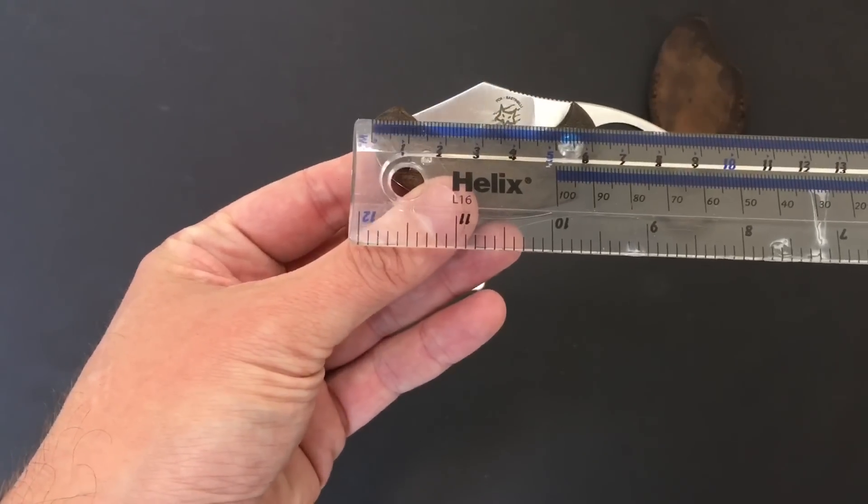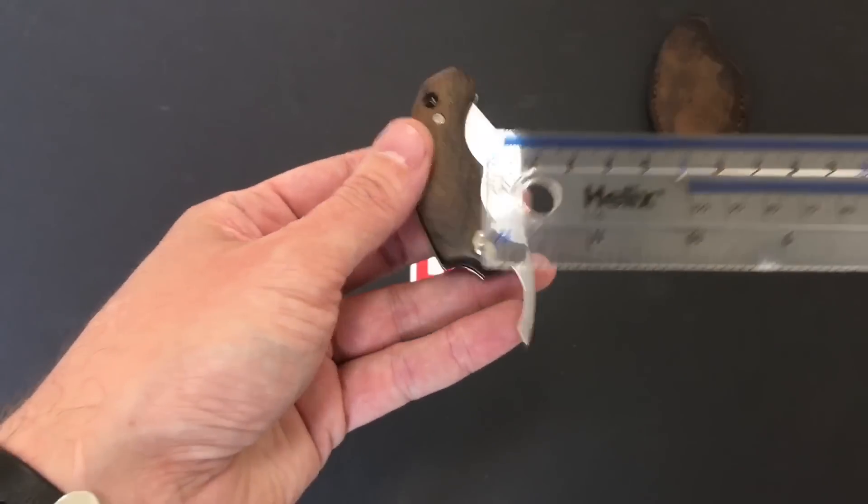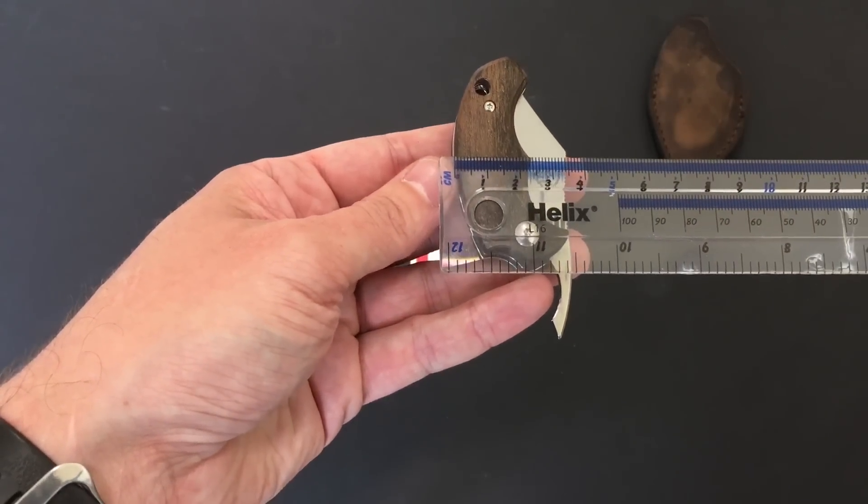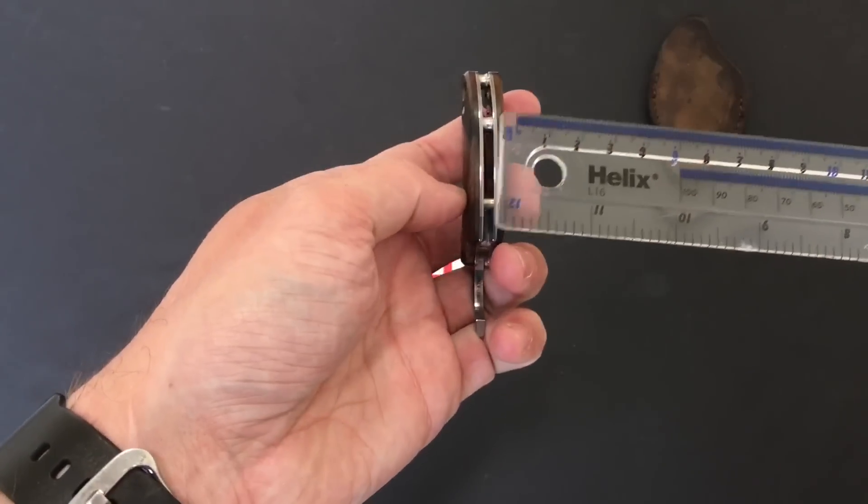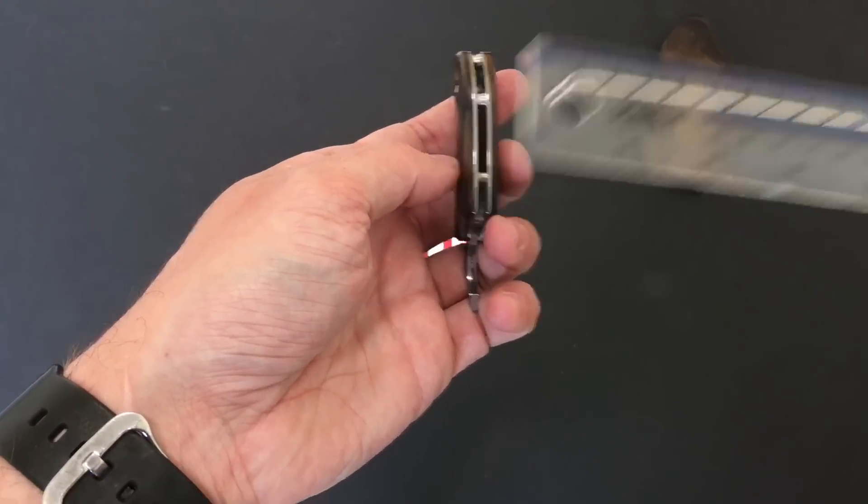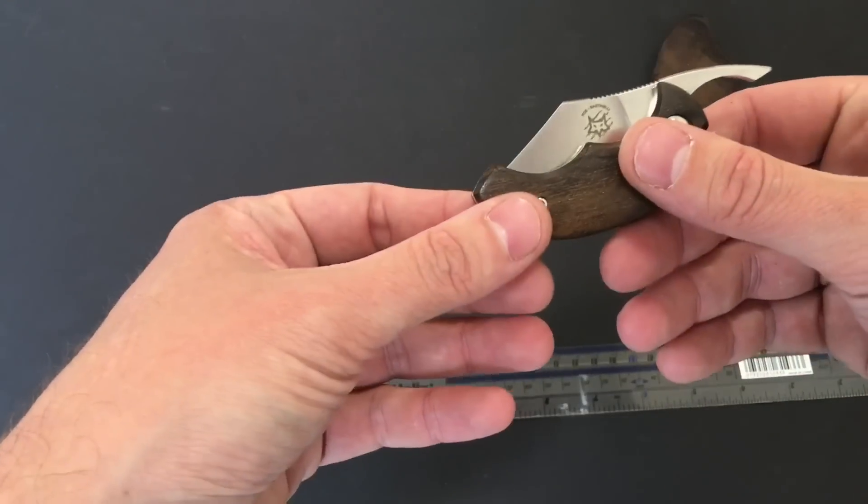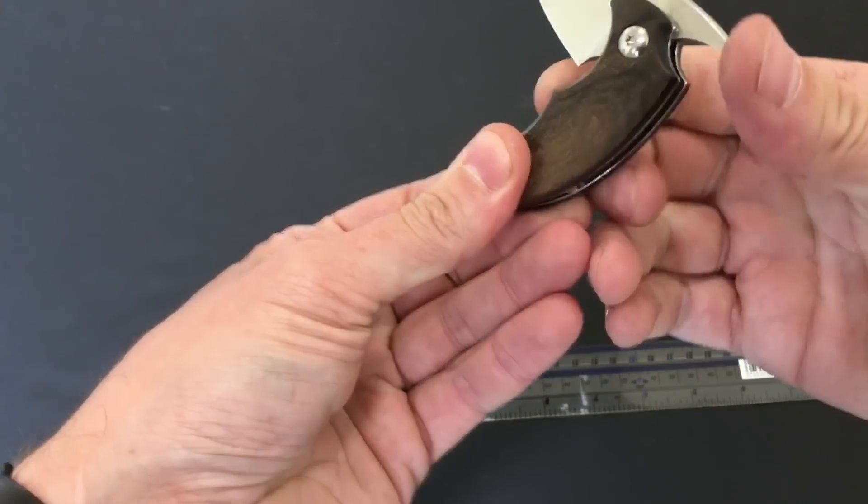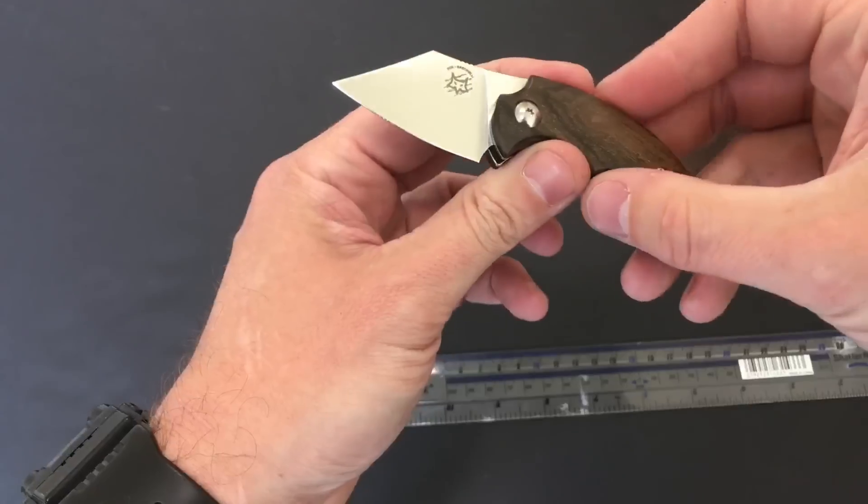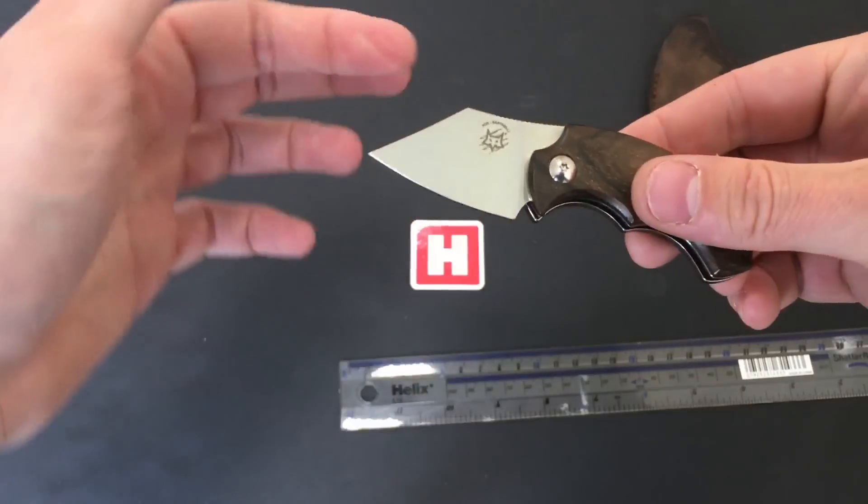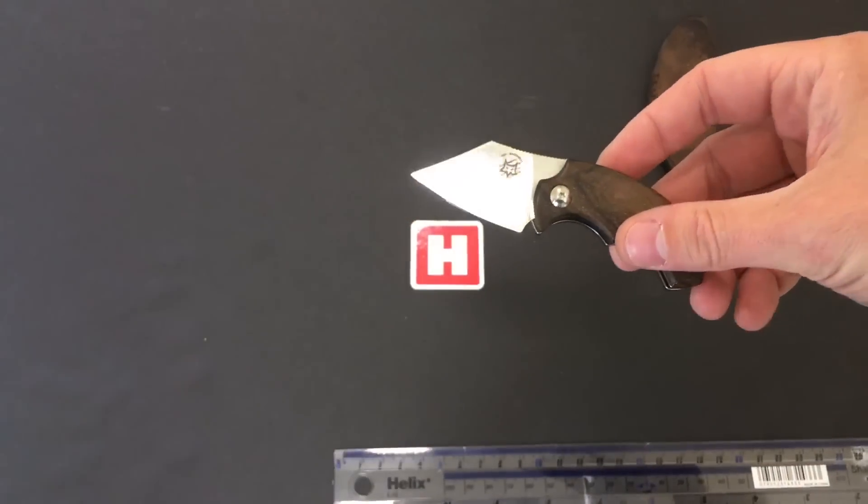And let's just measure him like that for you now. We're looking at nine centimeters and the widest part three and a half. We may as well do the width including the scales, looking at about 1.2. But a really nice Bastinelli designed and Fox come together for the Dragon Tag in Santos wood.